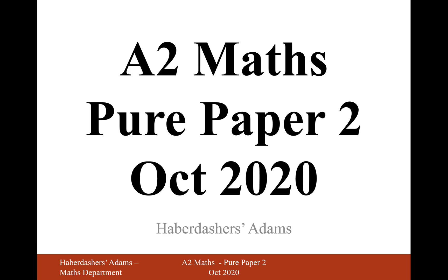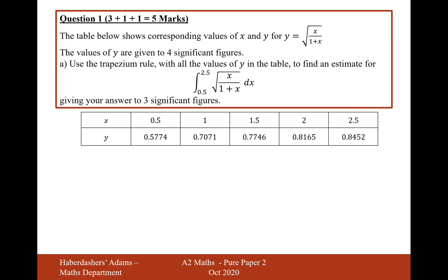Hello there, welcome to the October 2020 paper 2. Here we're looking at question 1. The table below shows corresponding values for x and y, for y equals the square root of x over 1 plus x. The values of y are given to four significant figures. Use the trapezium rule with all the values of y in the table to find an estimate for this integral here between 0.5 to 2.5, giving your answer to three significant figures.